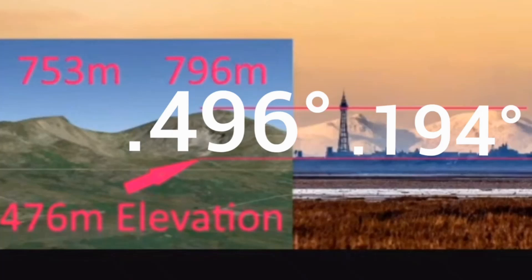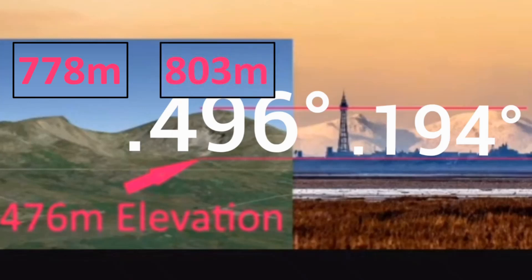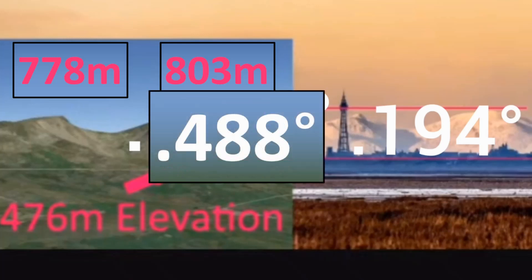We've already dealt with Dow Crag in the last video — it's not 753 meters high, it's actually 778. Similarly, Old Man of Coniston is not 796 meters, it's actually 803 meters. And if you go back and watch the previous video, I calculated an angular size of Blackpool Tower to be 0.488 degrees rather than 0.496. That obviously depends on an accurate height above sea level, which we don't really have. It's probably time I sent out a surveyor to do it, but just keep in mind that the actual height is a little bit uncertain.